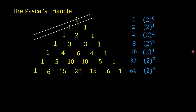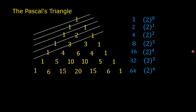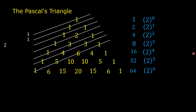Here is another very interesting property of Pascal's Triangle. By summing along shallow diagonals: 1; 1; 1 plus 1 is 2; 1 plus 2 is 3; 1 plus 3 plus 1 is 5; 1 plus 4 plus 3 is 8; 1 plus 5 plus 6 plus 1 is 13.